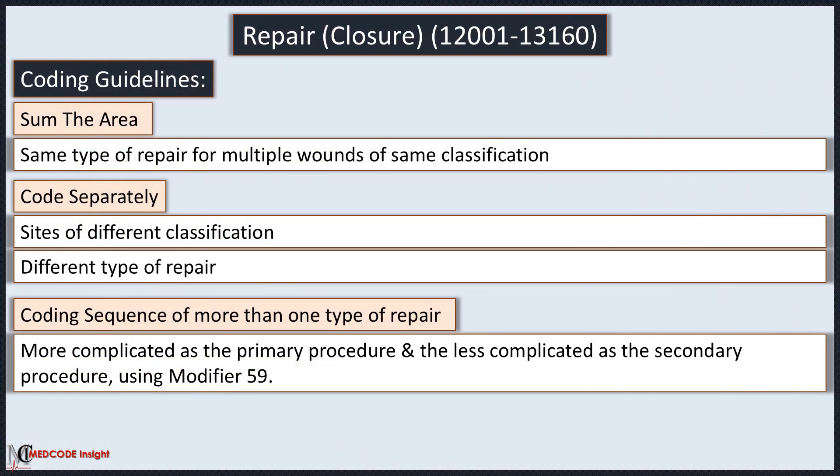There are specific coding guidelines to follow when dealing with repair. When multiple wounds are repaired, add together the lengths of wounds that fall within the same classification. However, do not combine the length of repairs from different classifications or different types of repair. When more than one classification of wound is repaired, list the more complicated procedure as the primary procedure and the less complicated one as the secondary procedure using modifier 59.